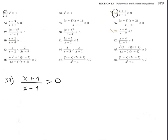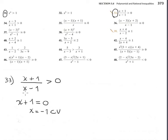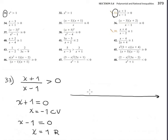Problem 33 is a rational inequality — rational means you have a fraction, a division of two polynomials. In this case it's similar but a little different. You determine the critical value and the restriction. The critical value is the zero of the numerator, which is negative one. The restriction is the zero of the denominator, which is positive one. We use both to partition the number line.